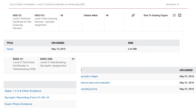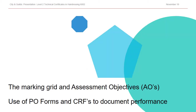Obviously, the more concisely that we can upload evidence, the better the functioning of the portal is — easing things for all of us. Moving on, we're going to look at the marking grids and the assessment objectives, the use of PO forms — which are the practical observation forms — and the candidate record forms, which we commonly call the CRFs.